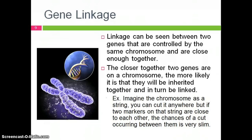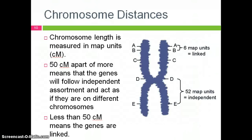This implies that there are different degrees of linkage that can be determined by exactly how close two genes are. In order to determine this degree of linkage, we first need to look at how chromosomes are measured. Chromosomes are measured in map units, and this can be very useful in determining the distances between two genes. If the two genes are 50 map units or more apart, they will follow independent assortment and act as if they are located on different chromosomes. If the genes are less than 50 map units away, they will appear linked. However, two genes that are three map units apart will appear more closely linked than two genes that are 40 map units apart.